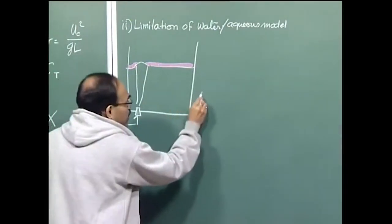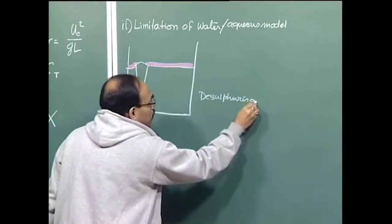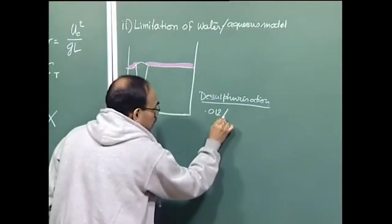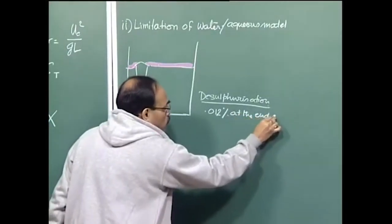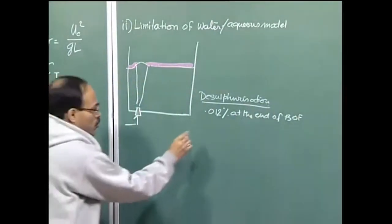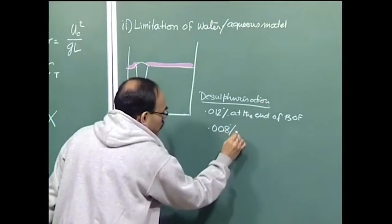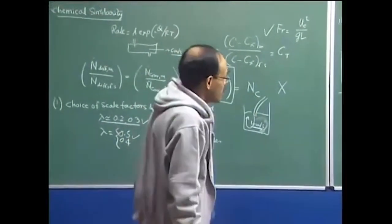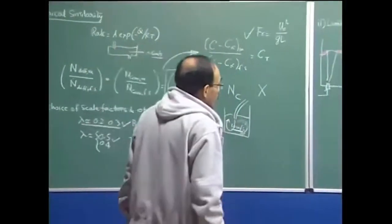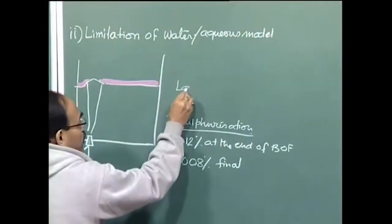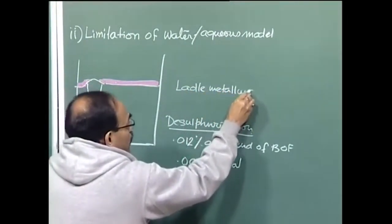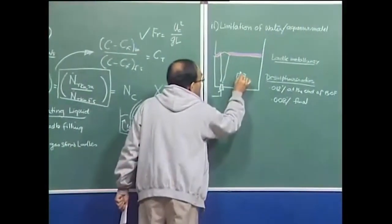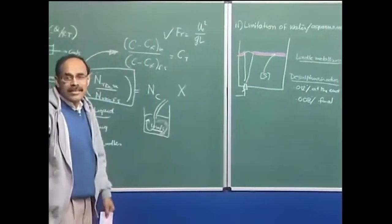In a gas-stirred ladle, the slag serves as a protective cover and does many things. For example, in desulphurization — suppose in your primary steel making you have achieved desulphurization down to 0.01 or 0.012 percent sulfur at the end of the BOF process, and you still need to remove further sulfur — the possibility of removing further sulfur is in secondary steel making or in the ladle. Desulphurization as you know is a slag metal reaction: sulfur sits in the metal and you want that sulfur to go to the slag phase.